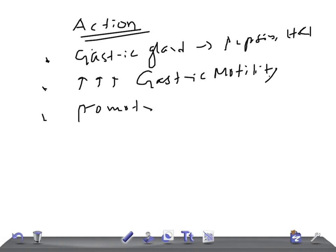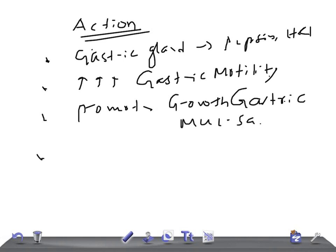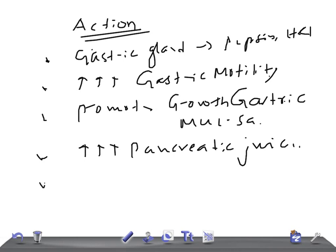Gastrin also stimulates the secretion of pancreatic juice, which is rich in enzymes, helping in the release of pancreatic enzymes. It also stimulates the islets of Langerhans in the pancreas to release pancreatic hormones.